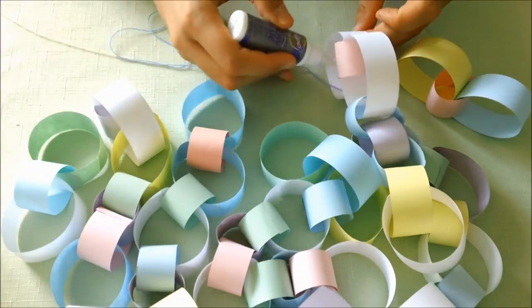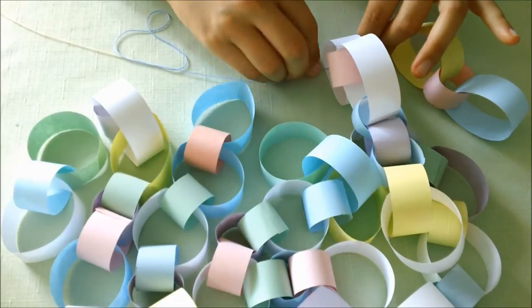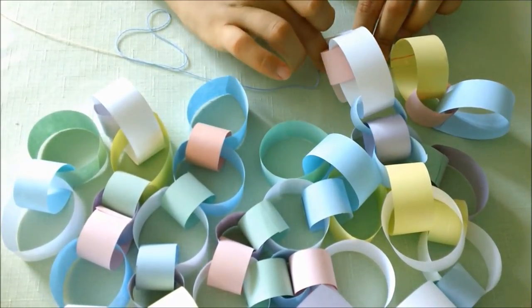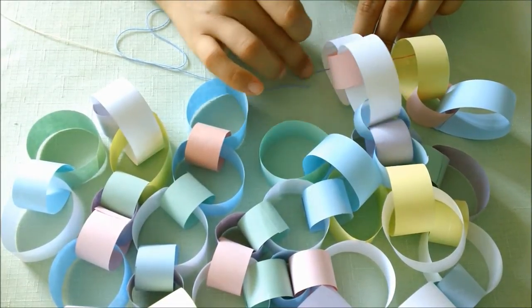As you thread each chain, apply just a dot of glue on the inside of the first ring to glue the string, so that when you hang the garland, the chains won't slide around but will stay in place.